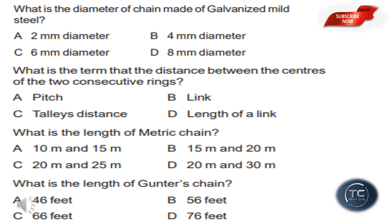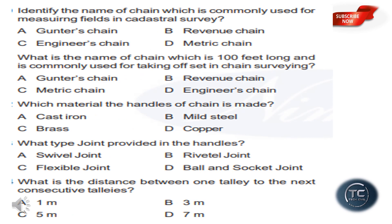What is the length of Gunter's chain? The answer is option C: 66 feet. Identify the name of the chain which is commonly used for measuring fields in a cadastral survey. The options are Gunter's chain, Revenue chain, Engineers chain, and Metric chain. The answer is option B: Revenue chain.